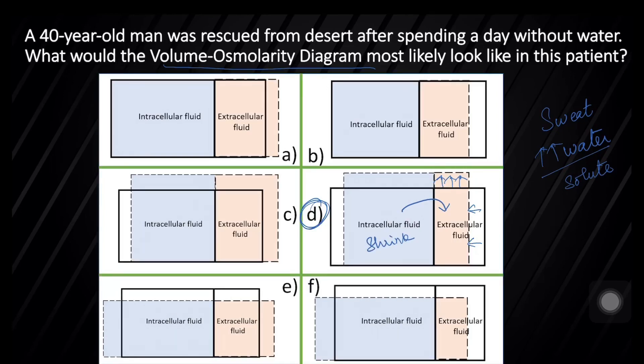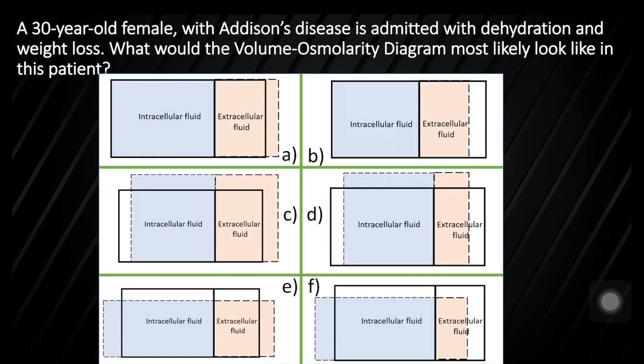Question number three: a 30-year-old female with Addison's disease is admitted with dehydration and weight loss. What would the volume-osmolarity diagram most likely look like in this patient? This is a case of Addison's disease. It's also called primary adrenal deficiency where there is deficiency of hormones secreted from the adrenal cortex. One of the hormones decreased is aldosterone, which is responsible for the sodium reabsorption in the kidney.